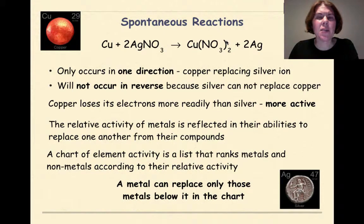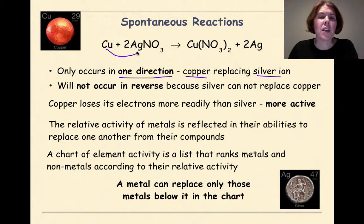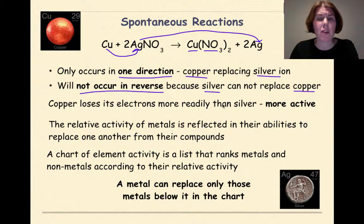Let's talk about spontaneous reactions. Here we have a reaction: Cu plus 2AgNO₃ yields Cu(NO₃)₂ plus 2Ag. This reaction is only going to occur in one direction, with the copper replacing the silver ion. The copper comes in, kicks out the silver — the silver will then go into its elemental form, and the copper will form a compound with the nitrate polyatomic. This will not occur in reverse because silver cannot replace copper. We say silver is not as active as copper. Copper will lose its electrons more readily than silver, so we say copper is more active.